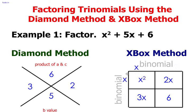So now think x times what will give you 2x? That would be 2. So now you have one binomial x + 2.